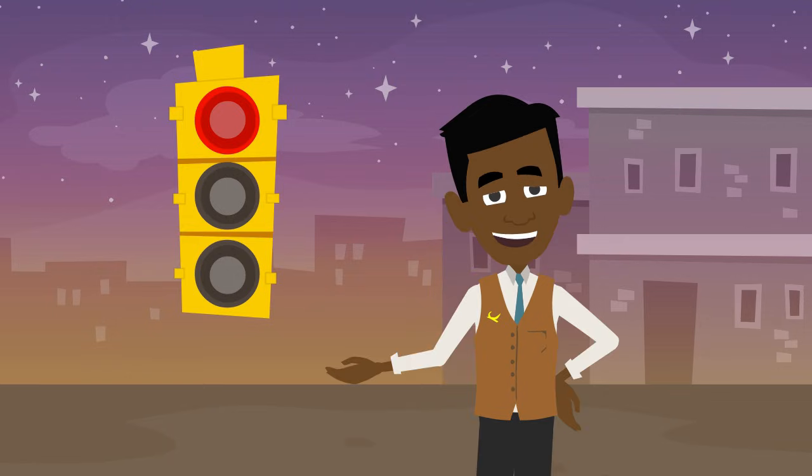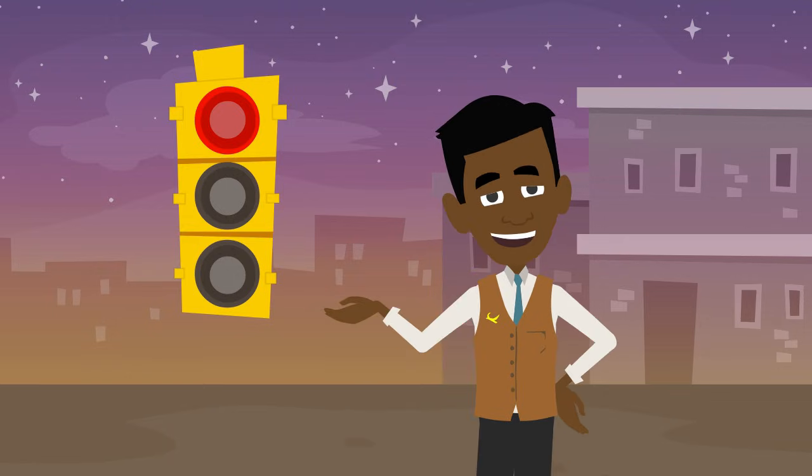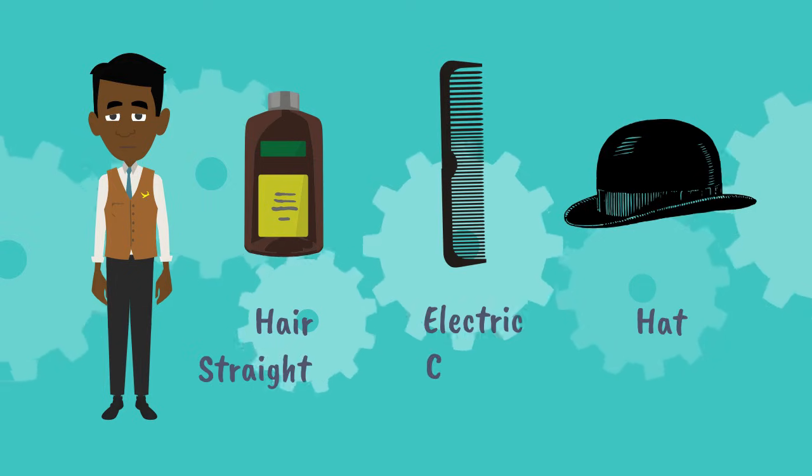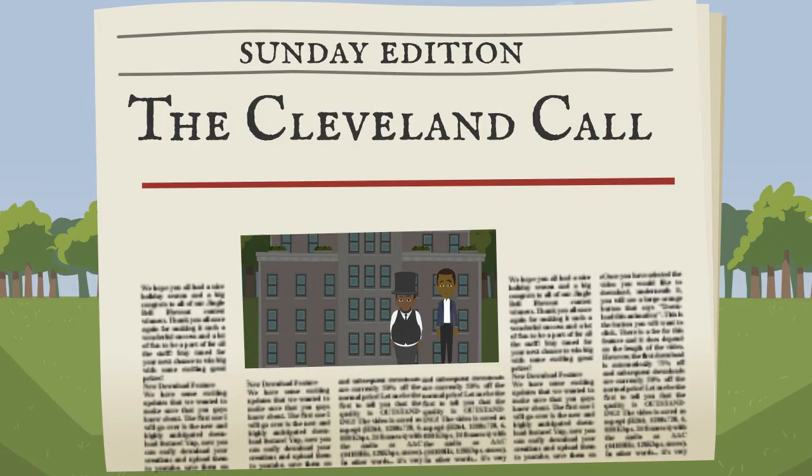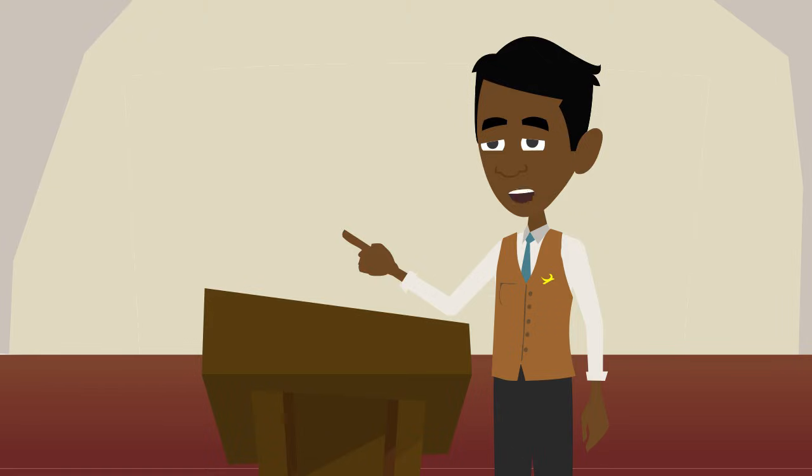He also invented a hair straightener, an electric hair curling comb, a hat fastener, and many other inventions. Garrett also published one of the first African American newspapers, The Cleveland Call. He also was an activist and humanitarian, giving speeches on civil rights and donating to others in need.